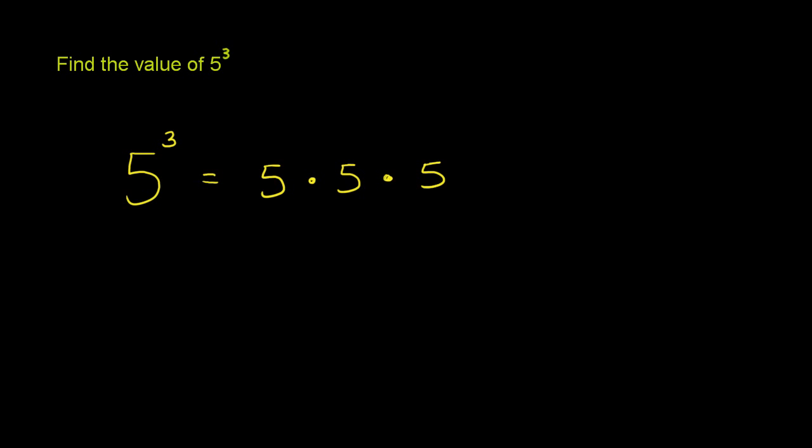5 times 3, just as a bit of a refresher so you realize the difference, 5 times 3, let me write it over here. 5 times 3 is equal to 5 plus 5 plus 5. So when you multiply by 3, you're adding the number to itself three times. When you take it to the third power, you're multiplying the number by itself three times.